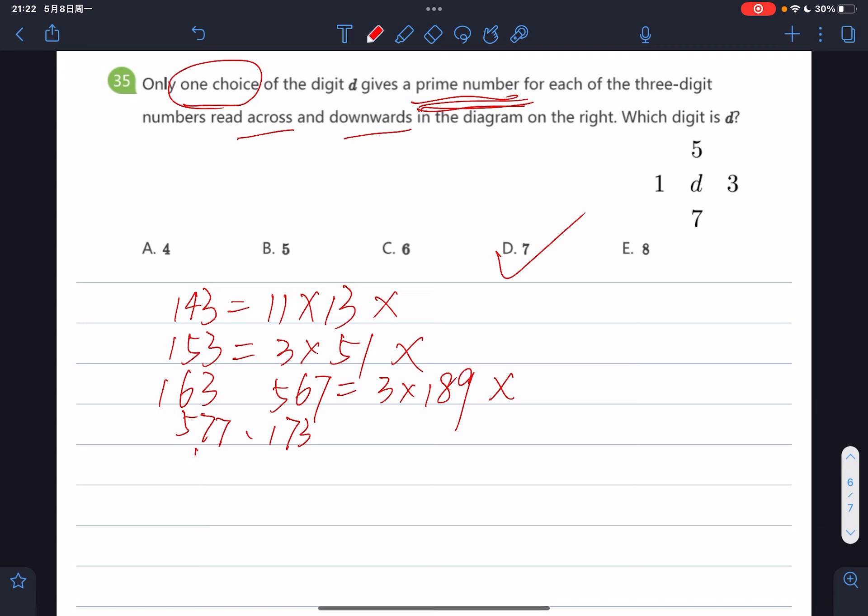So 183 can be expressed as 3 times 61. So it's not a prime number. Therefore, the correct answer is D.